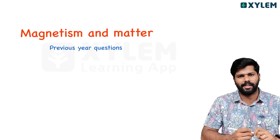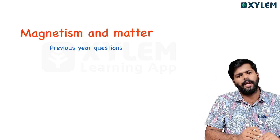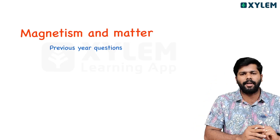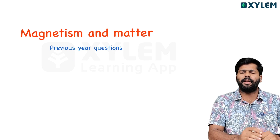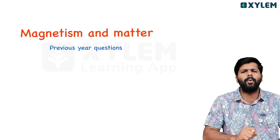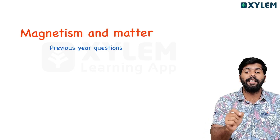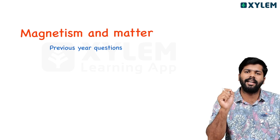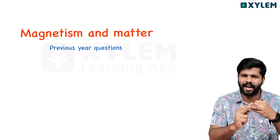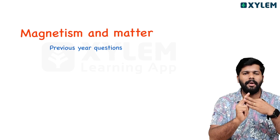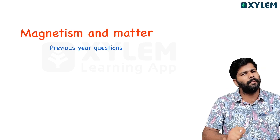Hello, Sabari Sreenivas here. We are discussing the previous questions in Magnetism and Matters. In this chapter, we will discuss previous exam questions from the section on Magnetic Materials. We will learn the classification: Paramagnetic, Diamagnetic, and Ferromagnetic.